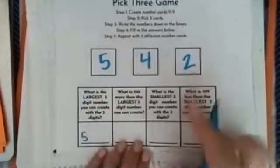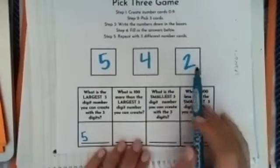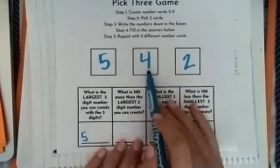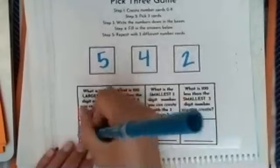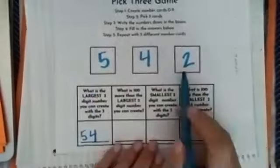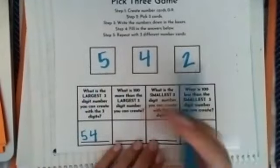Now what's the next biggest number? Is four bigger or is two bigger? I know four is bigger, so I need to put a four in my tens place. And then last but not least, two is my smallest number, so I put a two in the ones place.